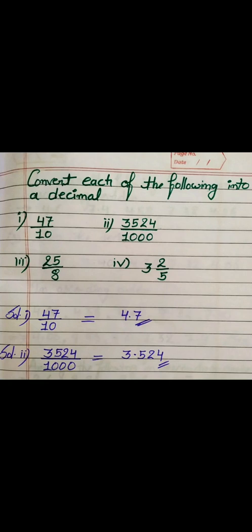Here we have to convert each of the following into decimals. As you are seeing, the first one is 47 upon 10 and the second one is 3524 upon 1000. The denominator values are 10 and 1000. If you are having a denominator value of 10, 100, 1000, 10000 — a multiple of 10 — the question is very simple. We just mark a decimal according to the number of zeros in the denominator. So 47 upon 10 gives 4.7, and 3524 upon 1000 gives 3.524.